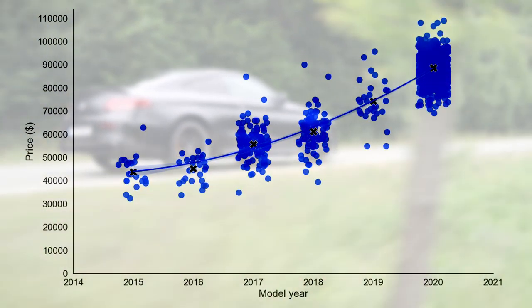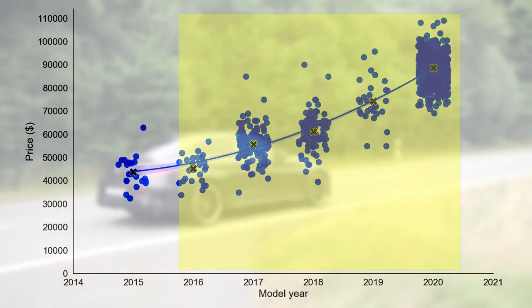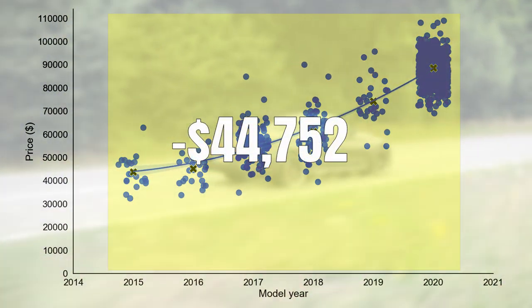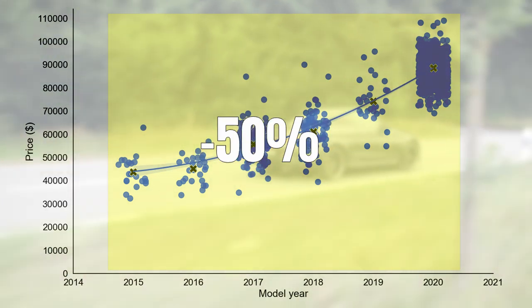And that last number is not a bad number at all, it's better than the one for a Porsche GT3. However, over the course of the full 5 years you will lose $44,752 and this equals 50% of the car's value.